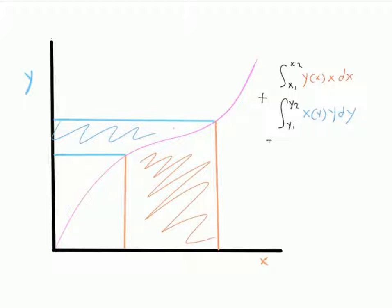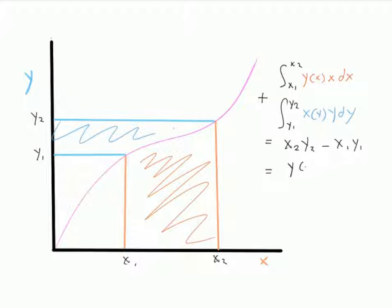Together, that's equal to this overall area, which would be x2 times y2 minus x1 times y1, which is equal to y times x(y) evaluated over the range x1 to x2.